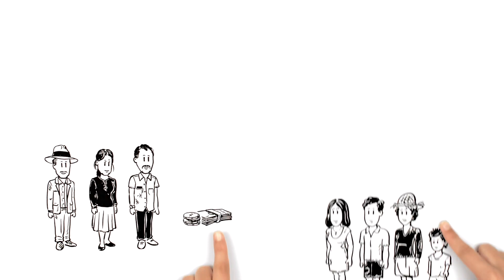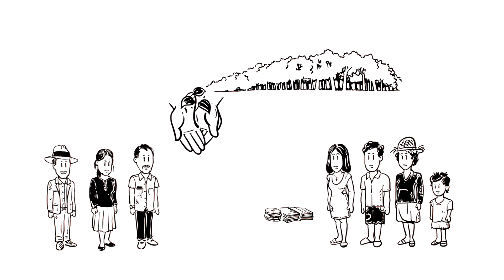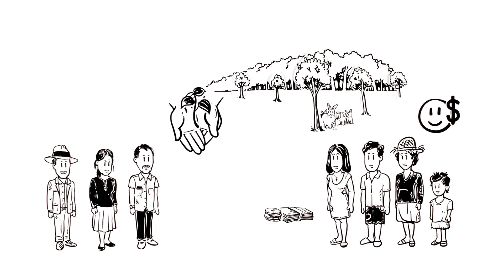For example, downstream villagers can pay those who cut down trees to plant new trees and take care of the forest instead. This allows them to continue earning a living while improving the environmental conditions of their communities without damaging other communities.